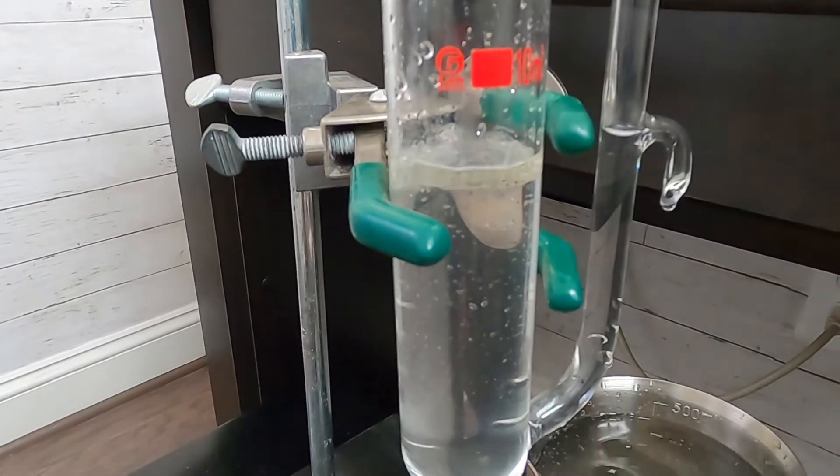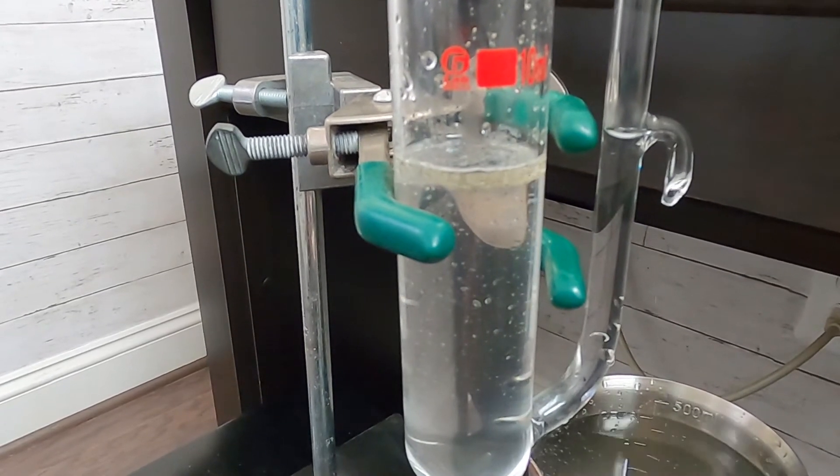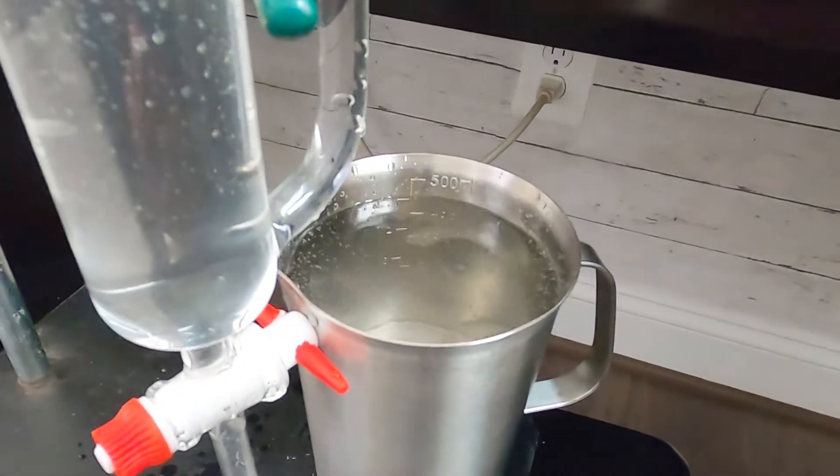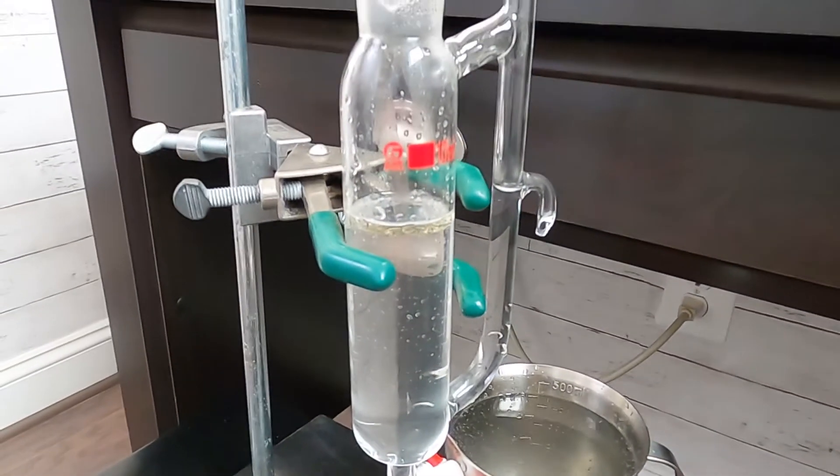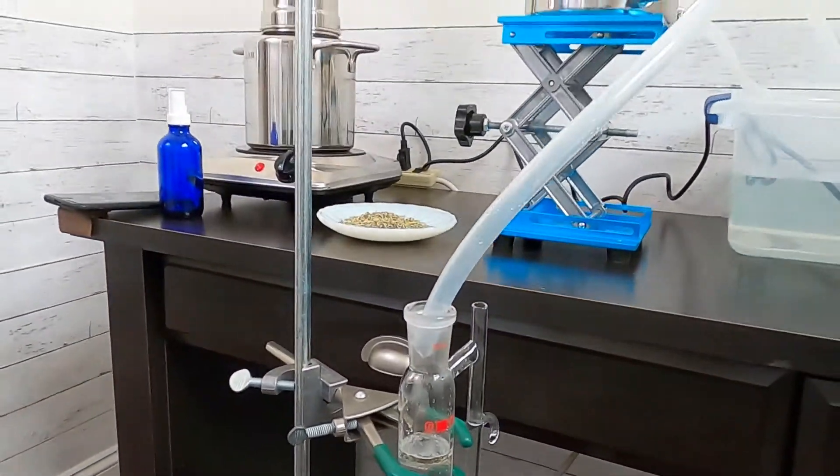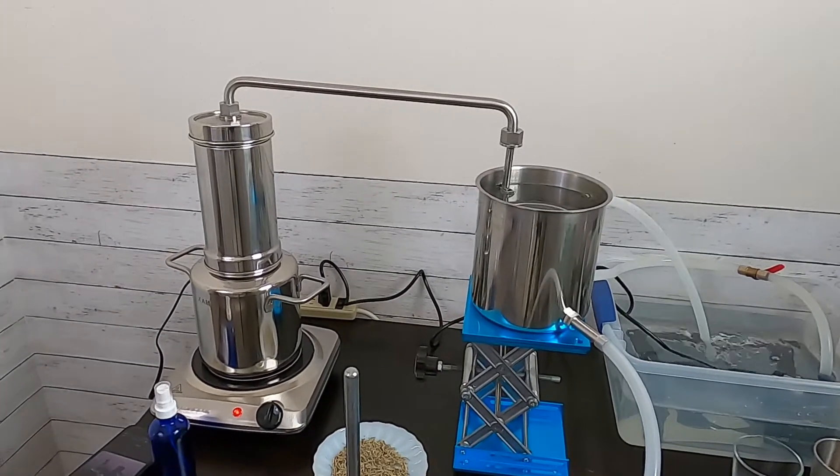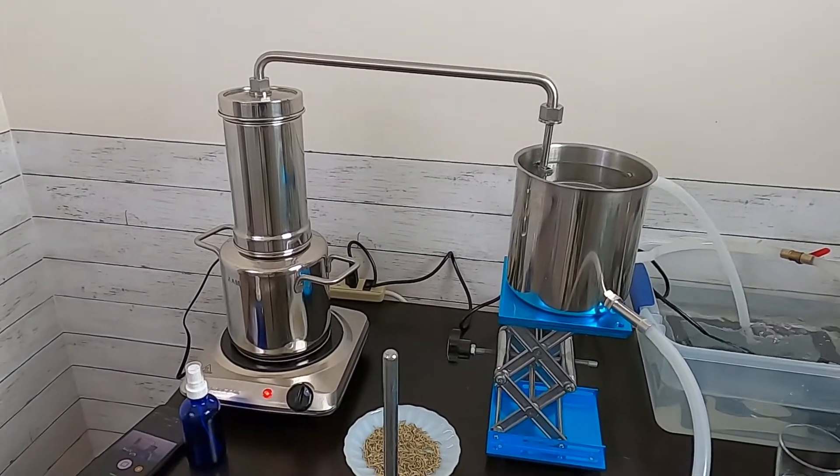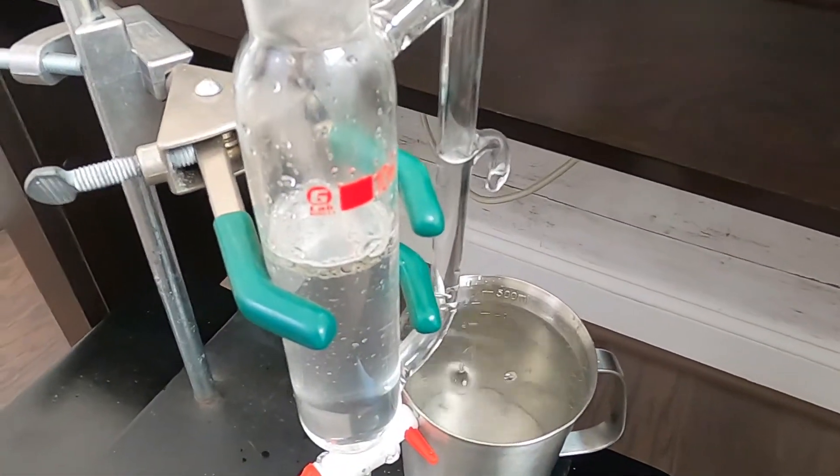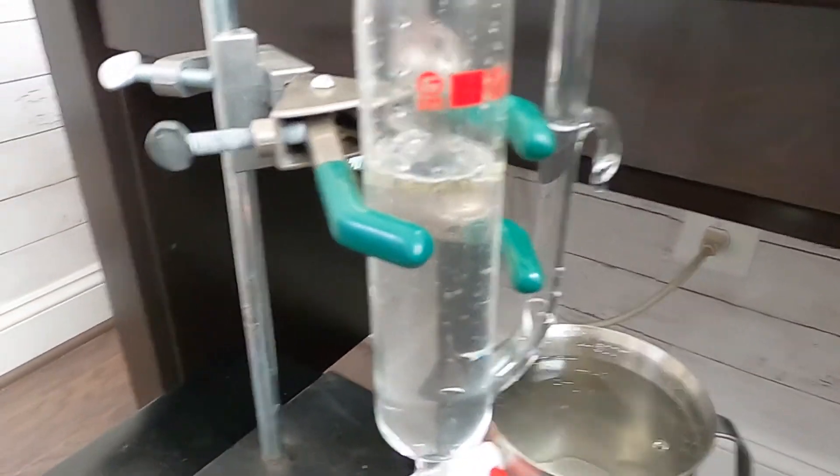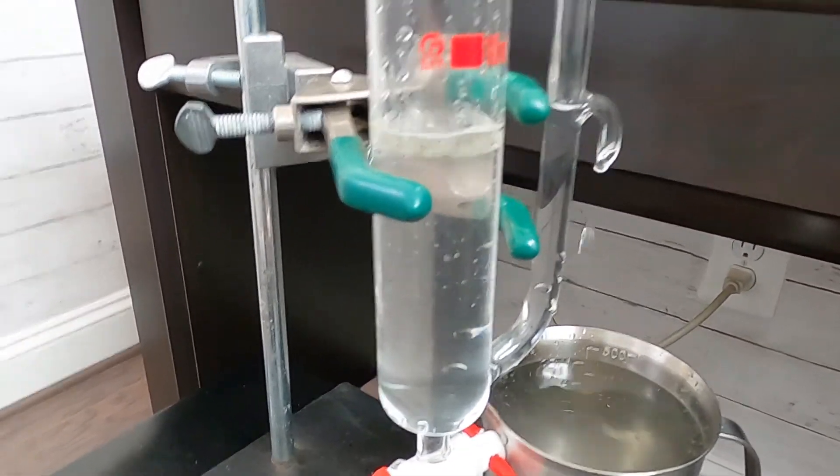You see we're getting close to 500 milliliter of the hydrosol. Normally rosemary, the yield of the oil, I mean the content of the oil, is about one or two percent. So we use 240 grams, so it's about four to four point five milliliter oil. It's pretty good.